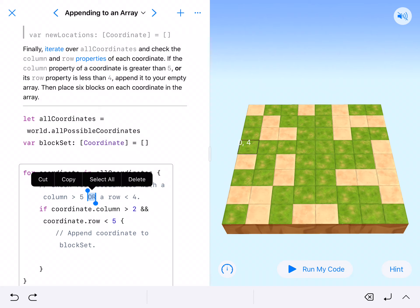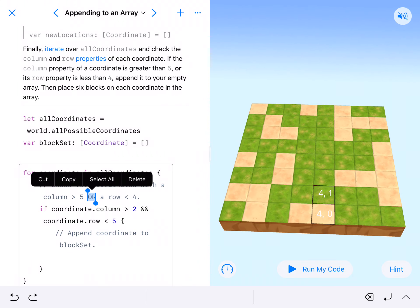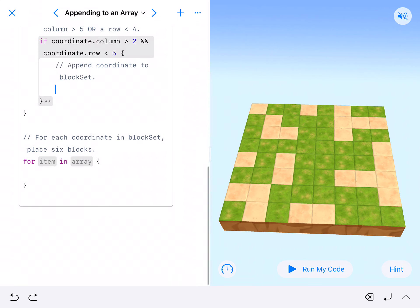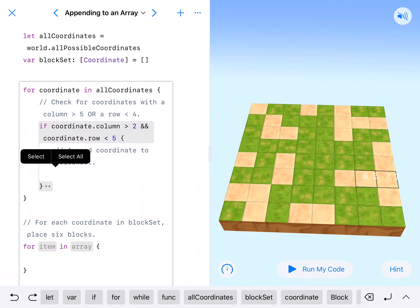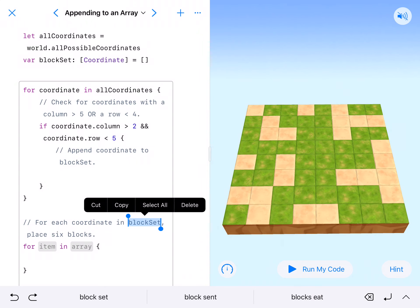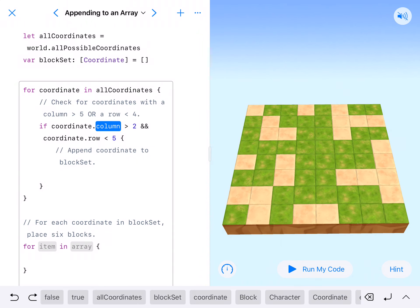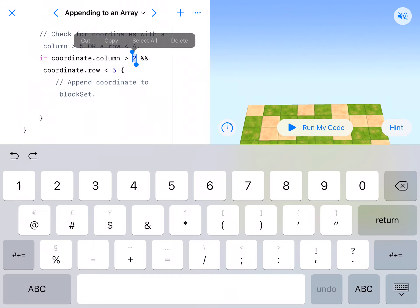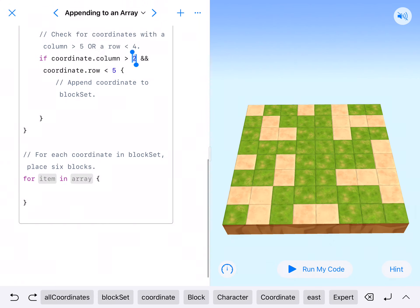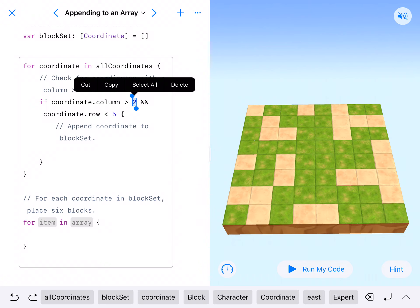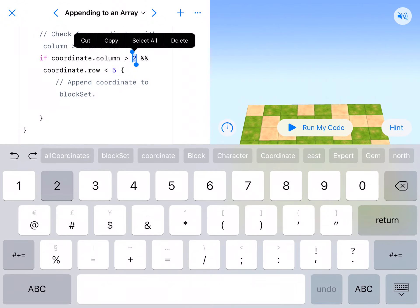So when we code this, we should get all these blocks here and below. And then all these blocks here. Now it's an or statement, meaning it's going to do both these and these. So let's see, they've already got us done. So if coordinate.column is greater than two. Well, we need this to be greater than five, as you saw. So let's change that two to a five.